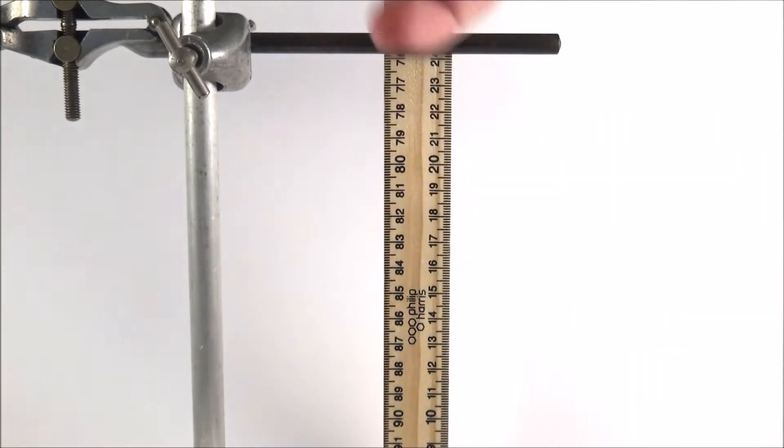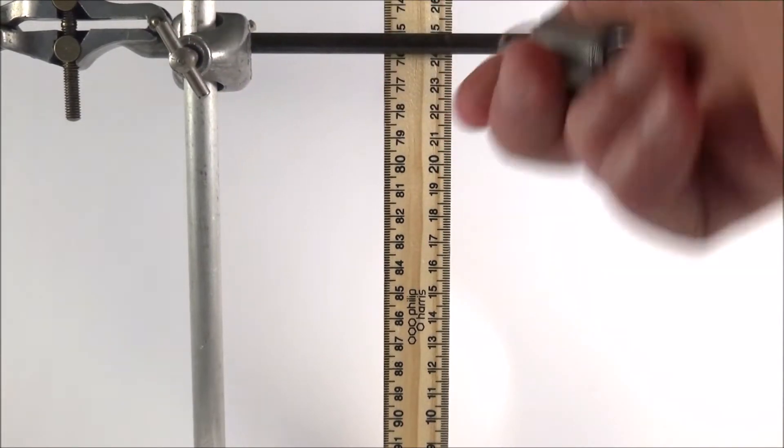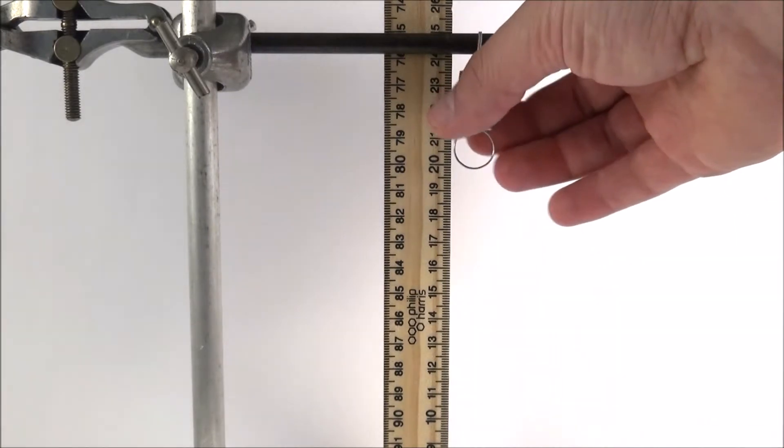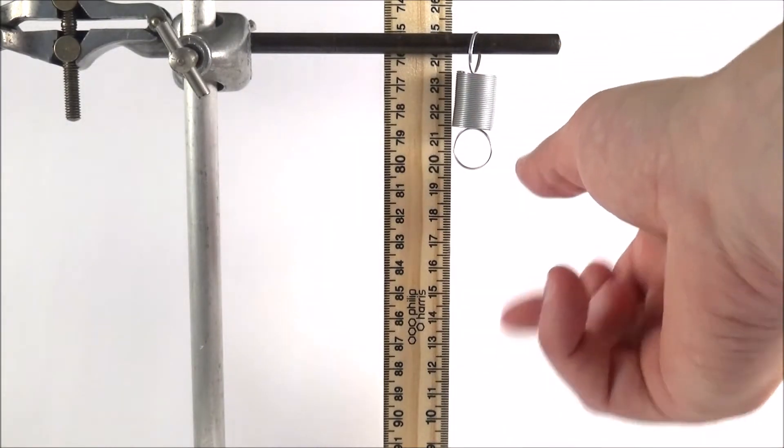Now the setup I have here I have my retort stand, I've got the rod part of the end of the clamp just over here for me to hang my spring on, and then I've got my meter ruler set up in a different retort stand so I can bring it quite close by because what I'm trying to do is look at the extension. It's not about the length, it's about the extension of this spring.